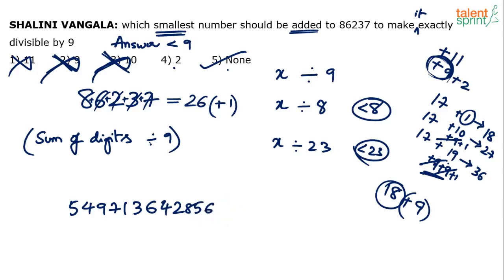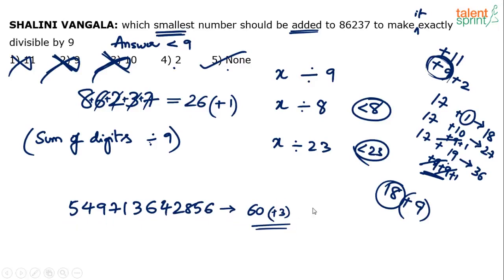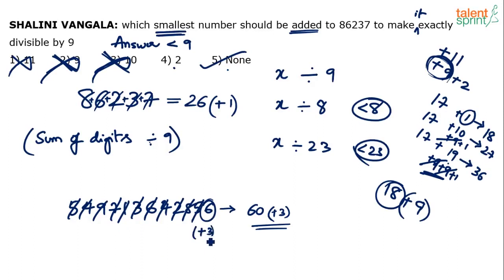Let me compute the full sum: 5+4=9, +9=18, +7=25, +1=26, +3=29, +6=35, +4=39, +2=41, +8=49, +5=54, +6=60. Sum is 60. Is 60 divisible by 9? No. By adding 3, we get 63, which is divisible by 9. Using the digital root shortcut: pair 5&4=9, 9=9, 3&6=9, 7&2=9, 5&4=9, 8&1=9 — only 6 remains. Add 3 to 6 to get 9. So add 3.